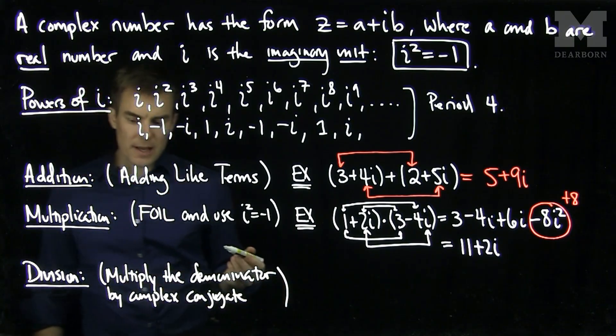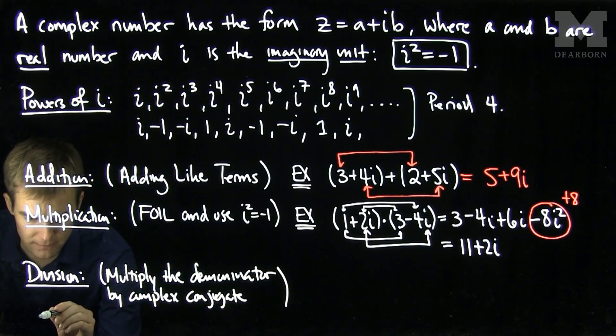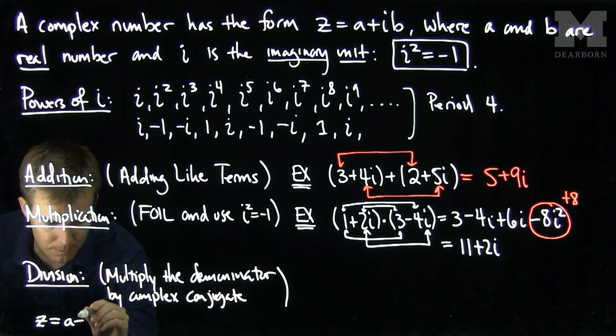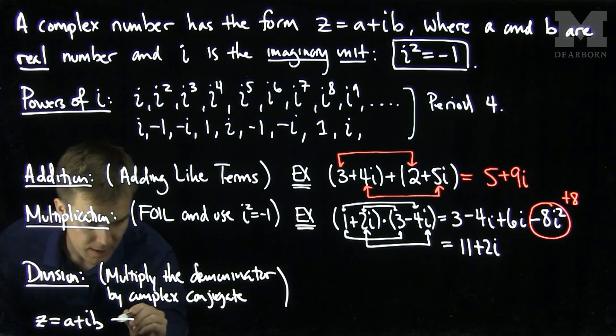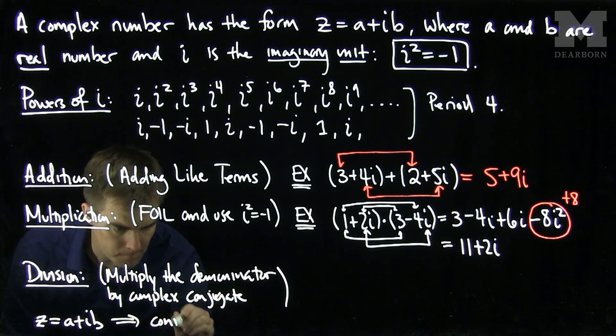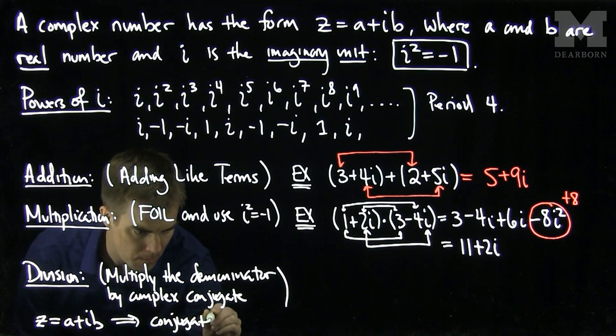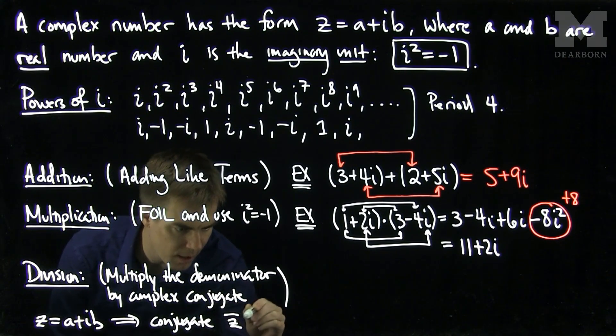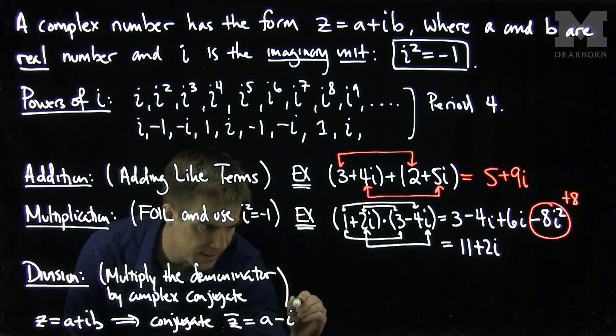The complex conjugate of a number is defined as follows. If z is a plus ib, its conjugate is z bar, which is a minus ib.